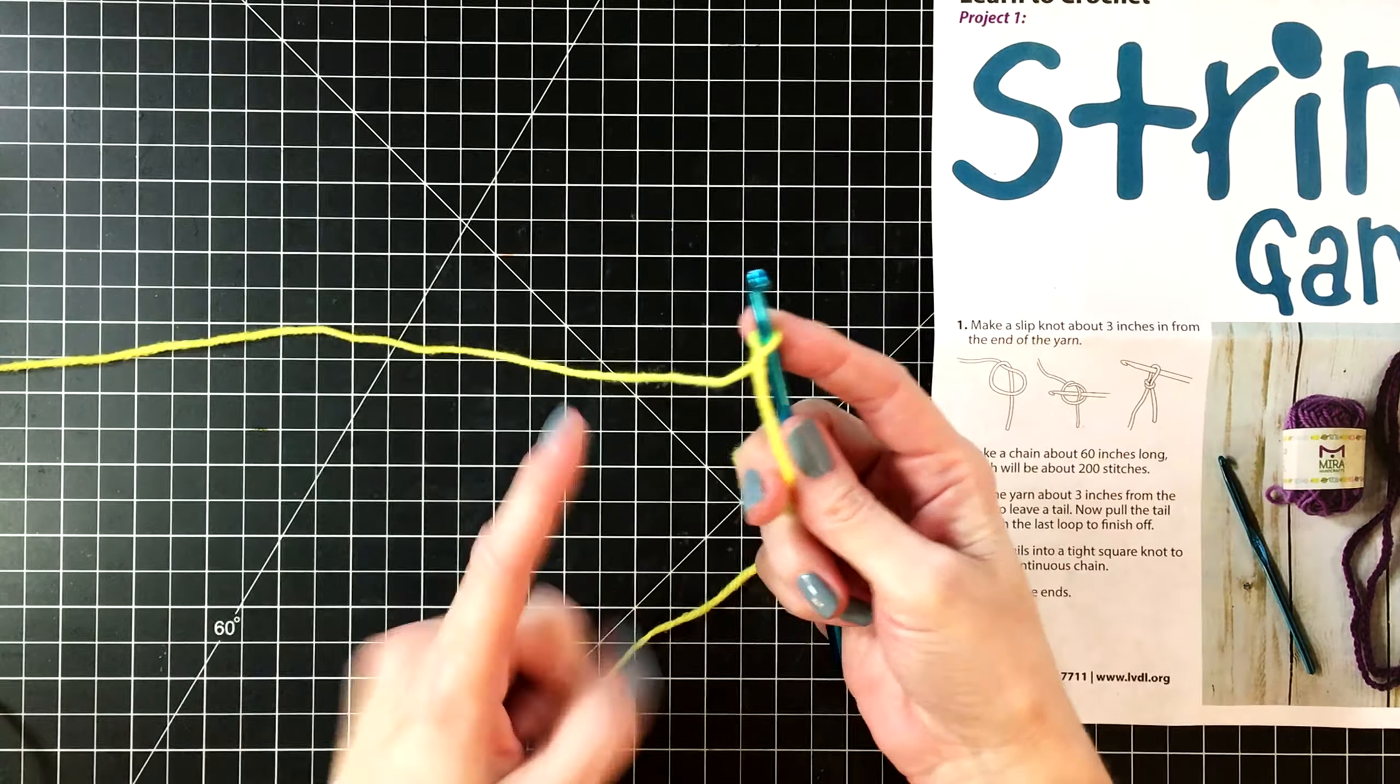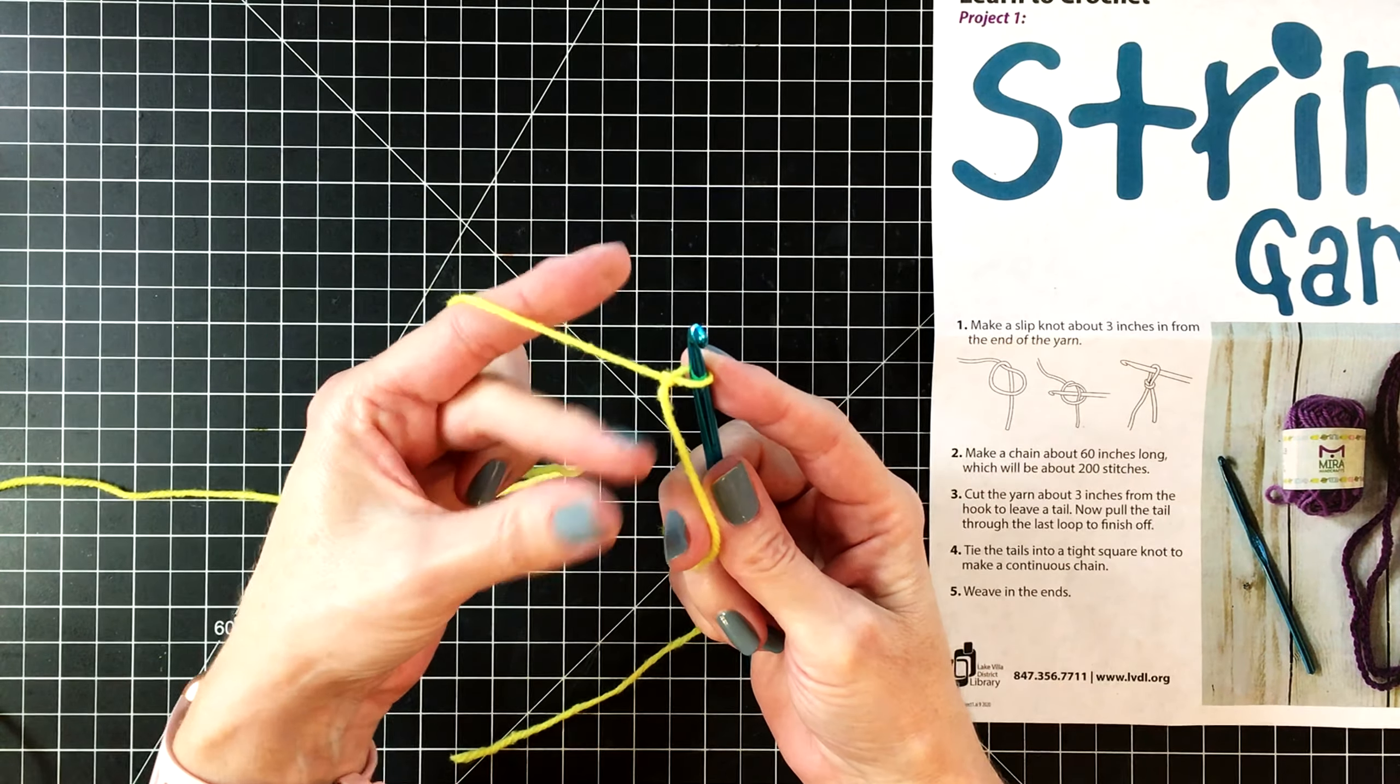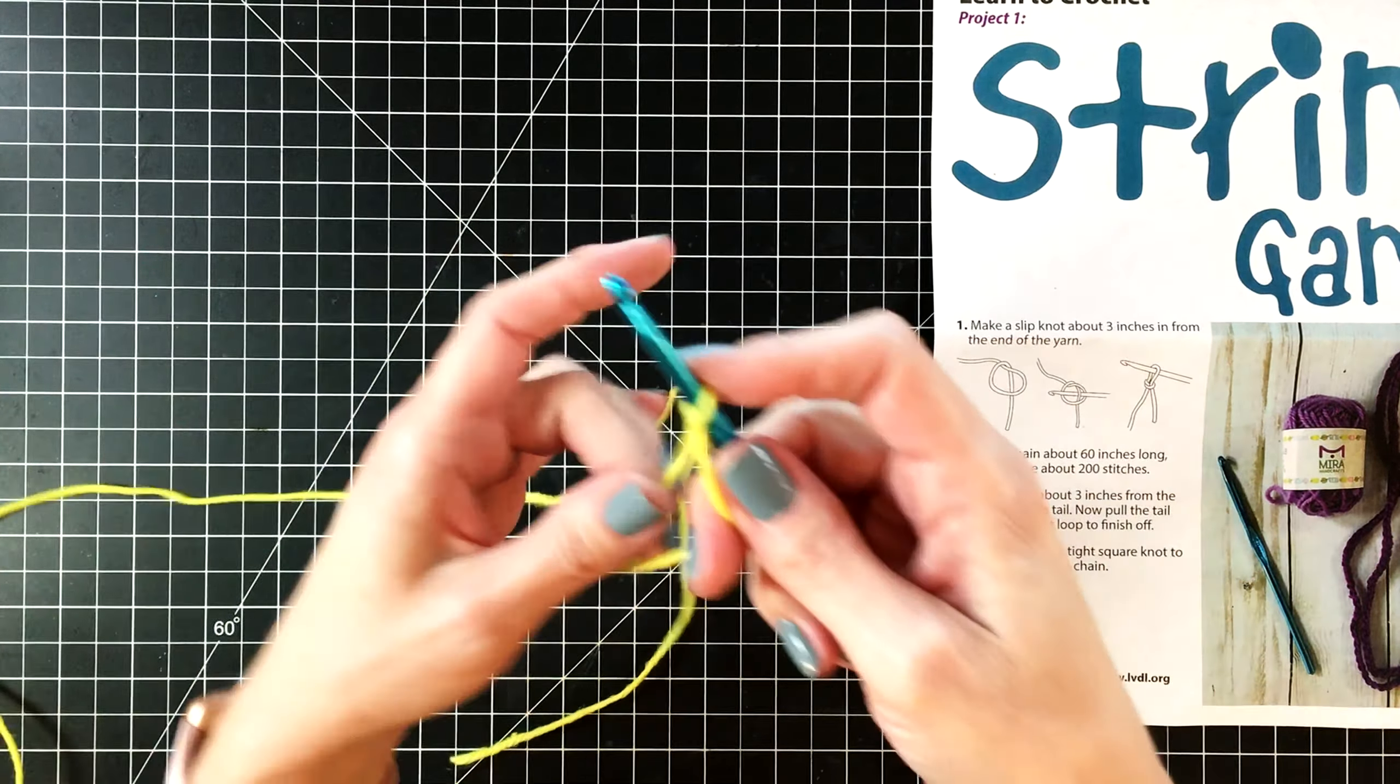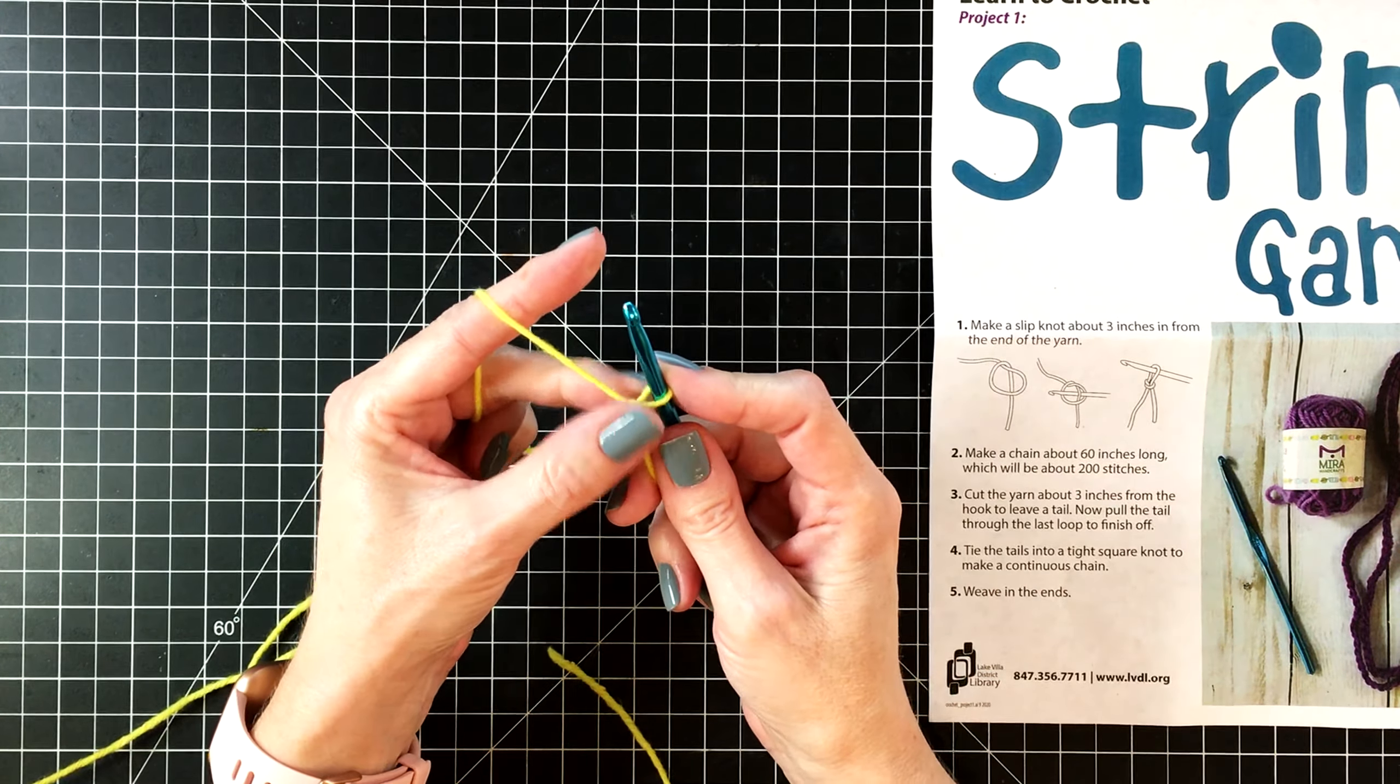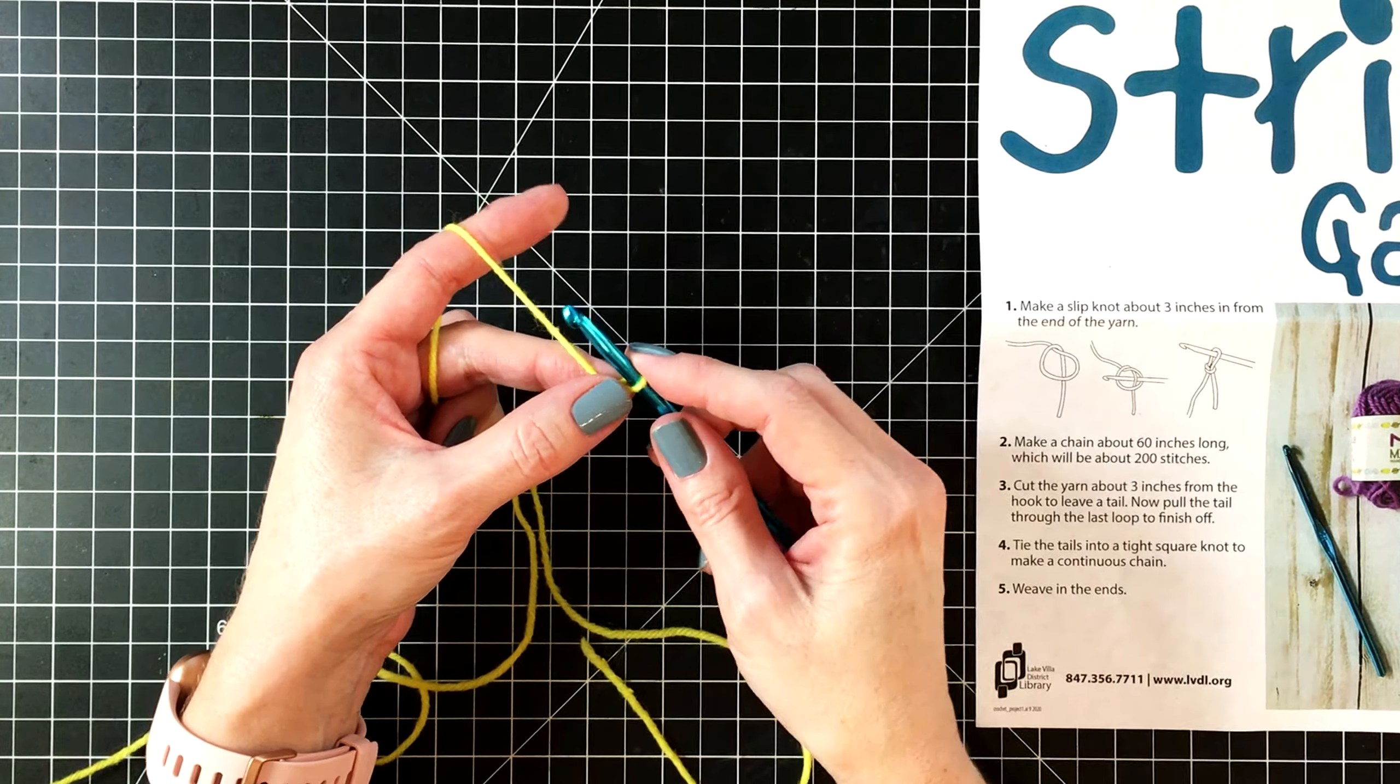Now I'm going to show you how I hold a crochet hook. I put the end of the yarn over my pointer finger and wrap my other fingers around it. This helps me to keep the string taut. And then with my thumb and my middle finger I pinch the yarn right next to the hook. This just gives me a lot of control. Now you can hold it like I do and at first it's going to feel very awkward. But as you practice you'll figure out what works best for you and you can hold it any way you'd like.